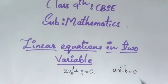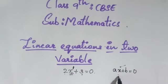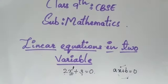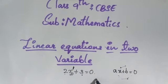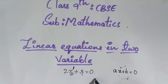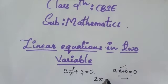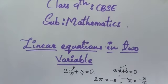Here only variable x is present. The 2 is a coefficient, 3 is a constant, and the degree of x is 1, hence it is called a linear equation. For one variable, taking 2x plus 3 equals 0: 2x equals minus 3, so x equals minus 3 divided by 2. This is how we get the value of variables in the case of one variable.